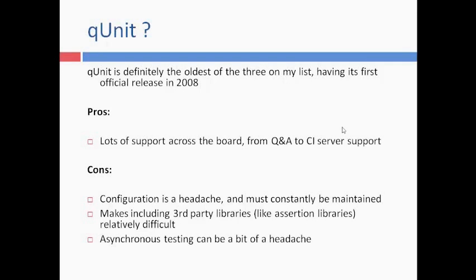QUnit is generally the oldest testing framework available, released in 2008. For the pros, there is a lot of support available across the board — many questions, answers, and sessions — so you can get answers easily. For the cons, there is a big overhead because at that time Node.js was not available, and you need to add some third-party APIs to do assertions, which is a bit difficult. Also, the main drawback is that asynchronous testing is a big headache.